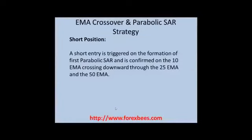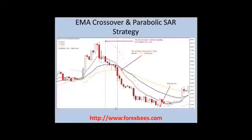Similarly, for a short position, a short entry is triggered on the formation of the first Parabolic SAR dot above the candlestick, and is confirmed on the 10 EMA crossing downward through the 25 EMA and the 50 EMA. Here you can see the first Parabolic SAR dot formed above the candlestick, and it is really at the point where the 10 EMA crossed the 25 EMA and the 50 EMA that this becomes your entry point for a short position.